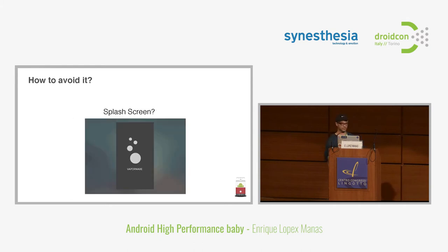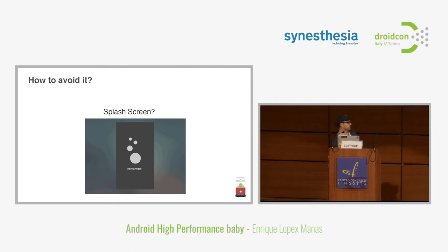More on how to avoid ANR — this might be controversial: splash screens. There was an article by Cyril Motier about not using splash screens at all. They are not a standard Android UI pattern, but they might have a place because applications sometimes need to download a lot of data from the backend initially. In this case, a splash screen can be useful if it's well done. For example, a splash screen that provides interactive feedback — like from Vaporware or Uber — that keeps the user engaged is a good solution.